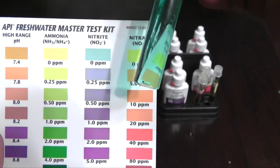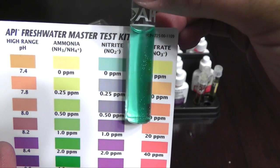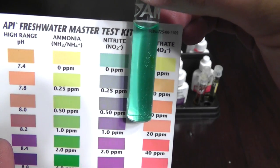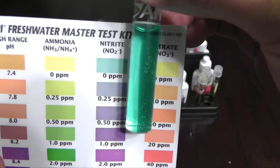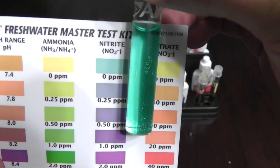This is your nitrites. Your nitrites here are what comes after the ammonia. And my nitrites are at zero parts per million. So that's good.